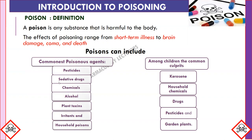The commonest poisoning agents in India are pesticides such as organophosphate, carbonate, and chlorinated hydrocarbon; sedative drugs; chemicals like corrosive acid, copper sulfate, alcohol; plant toxins like datura, strychnine, oleander; GIT irritants such as gastroil and protein; and household poisoning, which mostly includes cleaning agents.